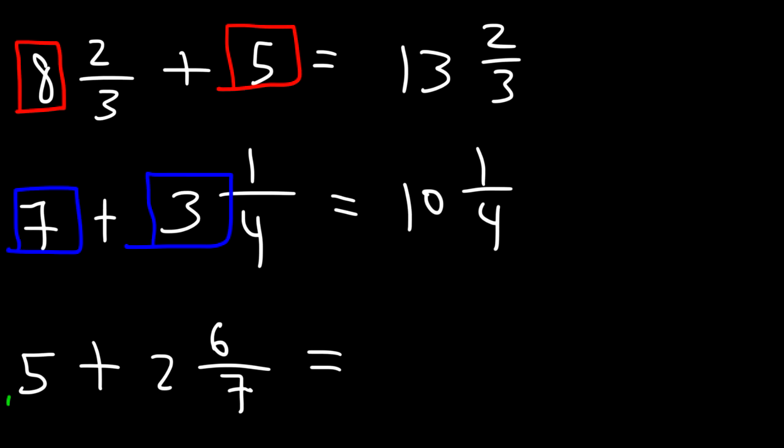And for the last example, just add 5 and 2. So this is going to be 7 and 6 over 7, and that's it.